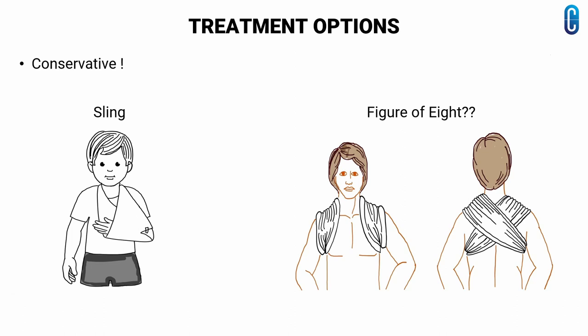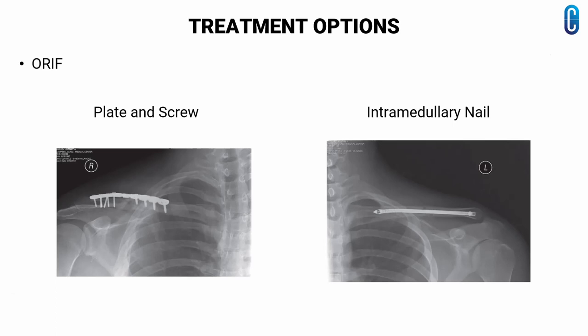We come to the treatment options for clavicle fractures. Most clavicle fractures are treated conservatively. The non-operative treatment consists of the use of a sling. Figure-of-eight splinting is still debated because of patient discomfort and the lack of proven benefit. Operative management usually consists of ORIF with plate and screws or intramedullary nail fixation. The treatment should be aimed at providing optimal outcomes for the individual patient and injury.